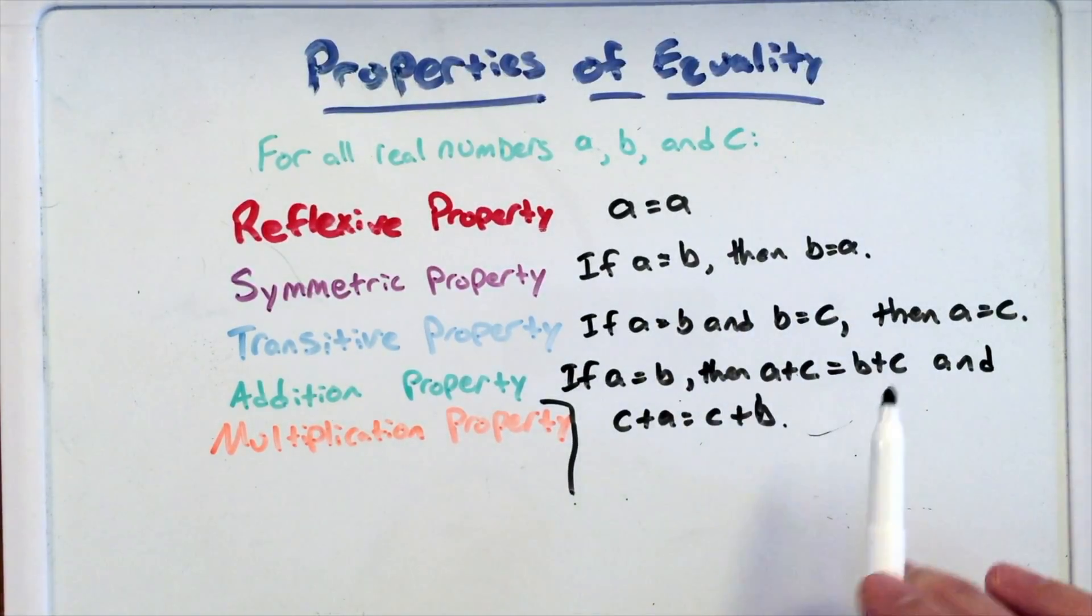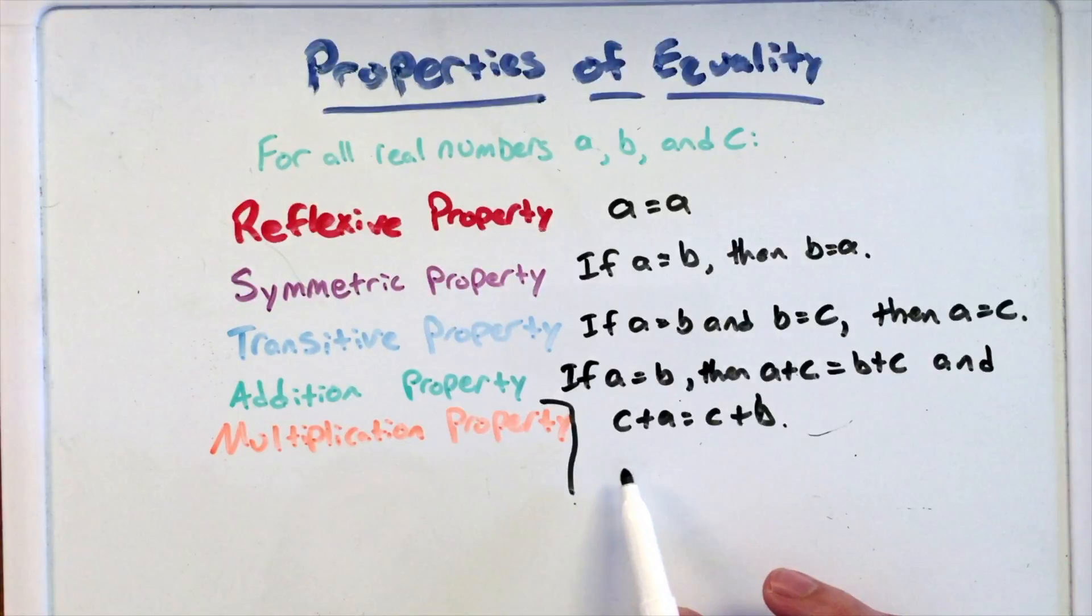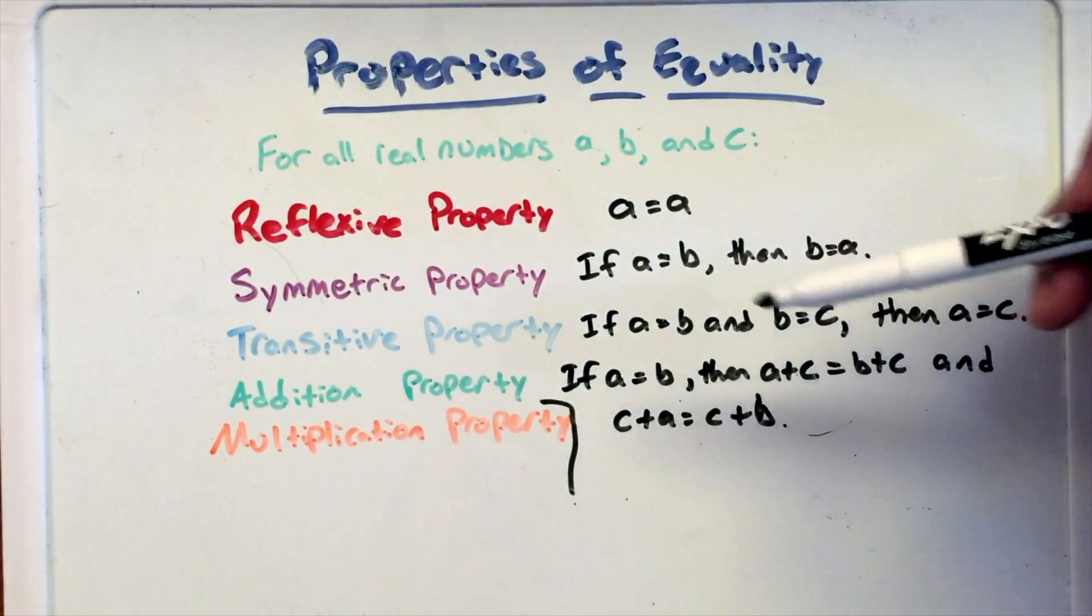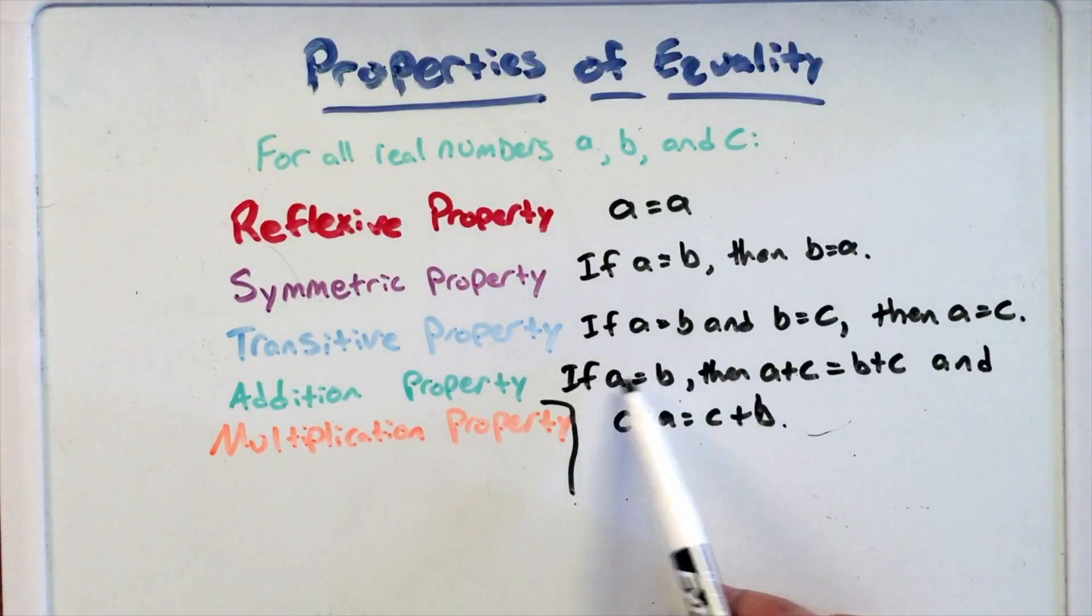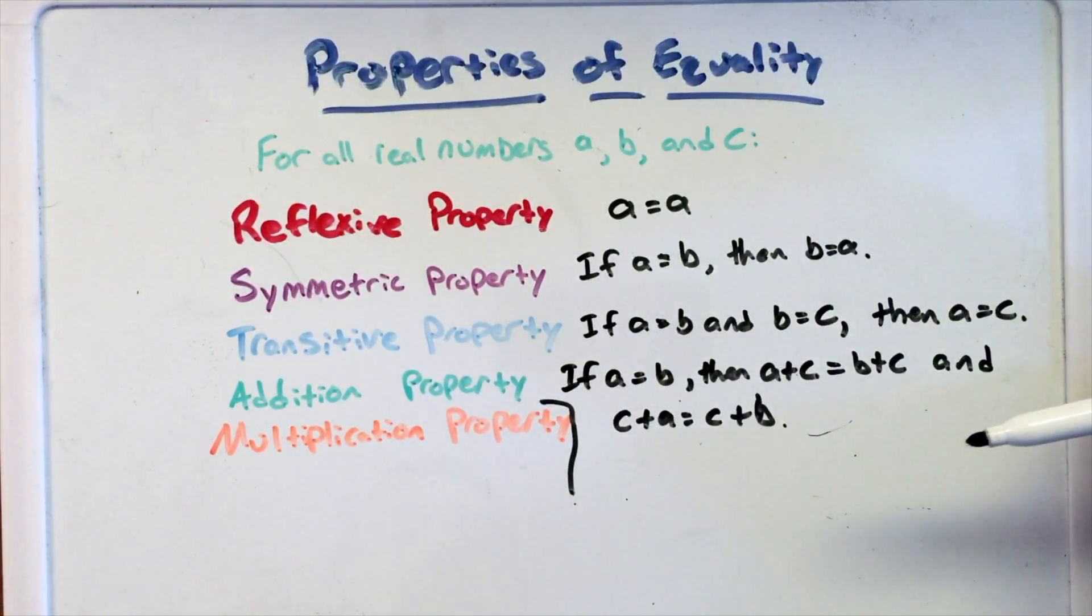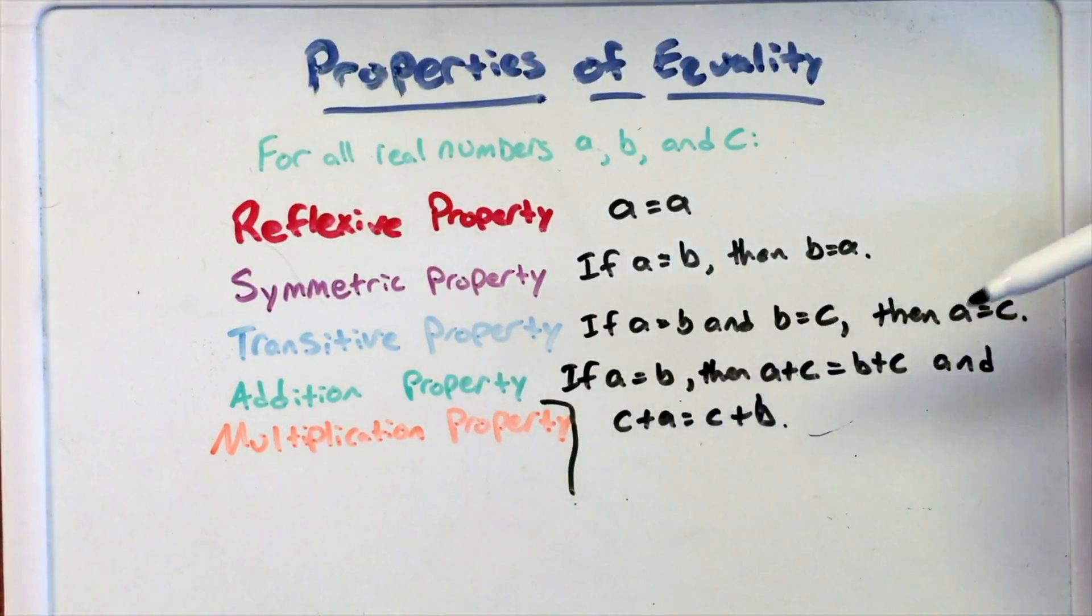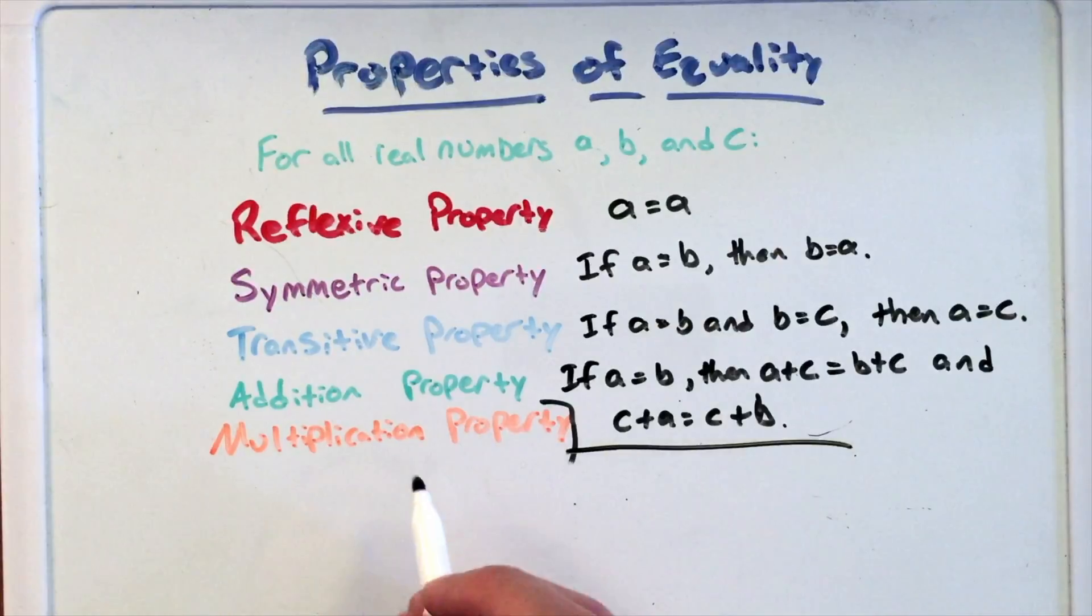And here, C plus A equals C plus B. So we can either add it to the right side of the letter or on the left side - it doesn't matter, it's still adding to both sides of the equation. So we're adding C to both sides of A equals B here, and that's going to make them equal. And that's the addition property - basically we can add the same thing to both sides.